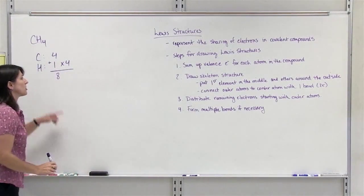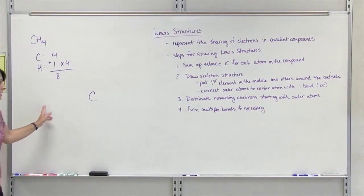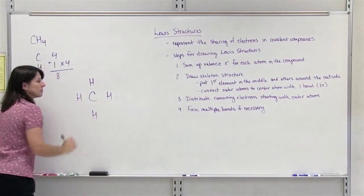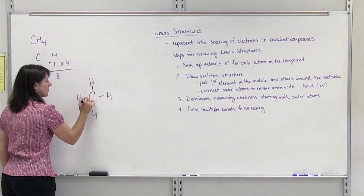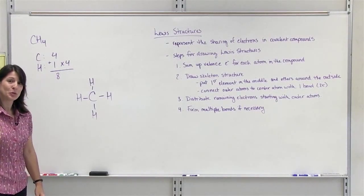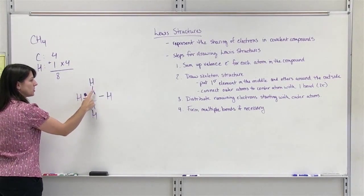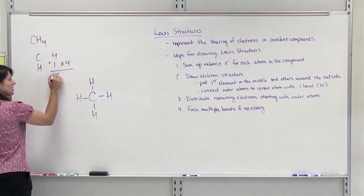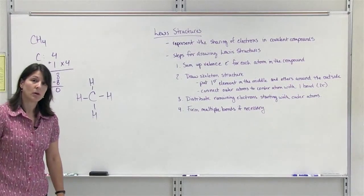Step 2: draw the skeleton structure. The first atom in the formula goes in the center; the other atoms go around the outside. We connect each of the outer atoms to the center with a bond — a line representing 2 electrons, a pair of electrons. So far in our skeleton structure we have used 2, 4, 6, 8 electrons to connect the outer elements to the center element. We subtract that from our total number of electrons, and that tells us we have used all of our electrons.